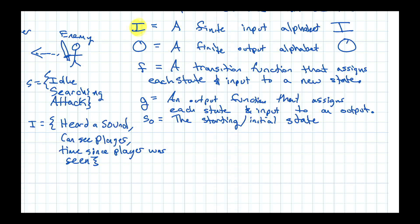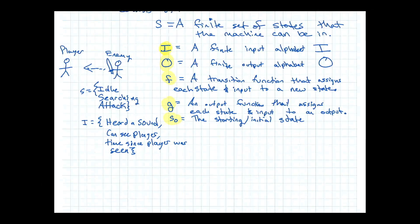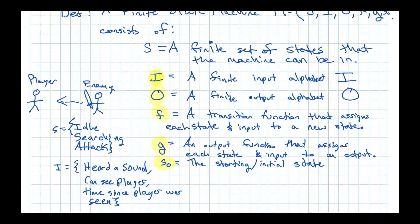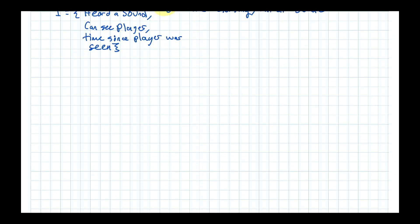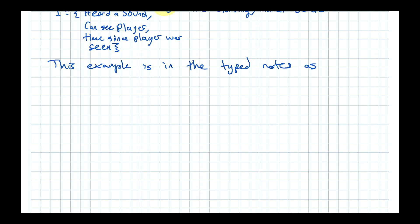So the full tuple is M = (S, I, O, f, g), and that's what a finite state machine is. To really understand these things, we're going to work through an example. There's a typed-up version of these notes as well. The example is also in the book.